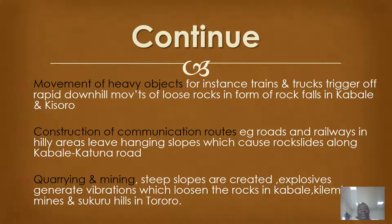Then we have human activities. For example, the movement of heavy objects — trains on tracks trigger off rapid downhill movement of loose rock particles in the form of rock falls. This is evident in Kabarole and Kisoro in south-western Uganda. The construction of communication routes such as roads in hilly areas leaves hanging slopes, which result in mass wasting types in case of any disturbance. We have evidence of rock falls along the Kabarole-Katuna road.